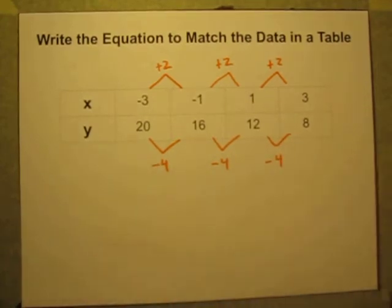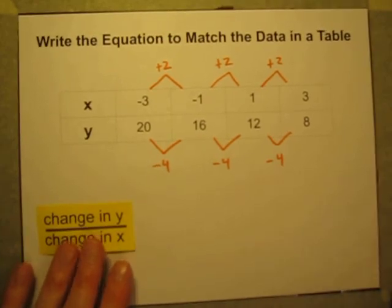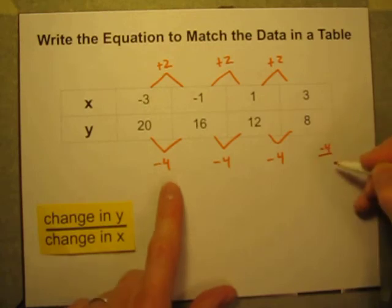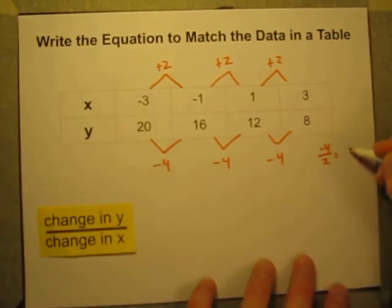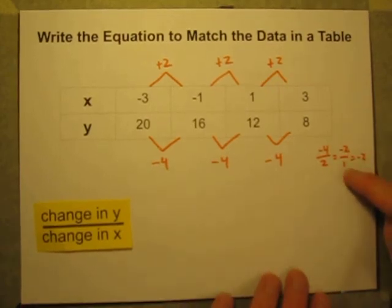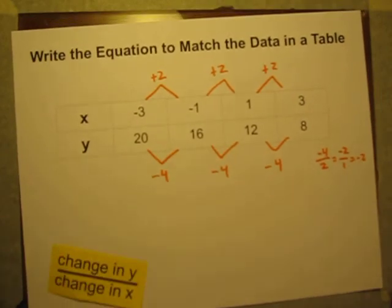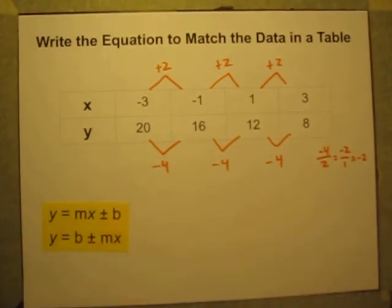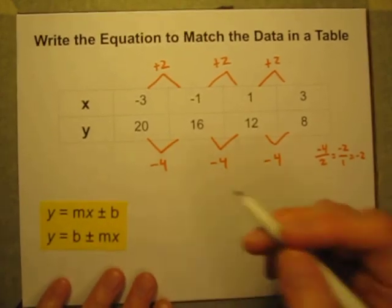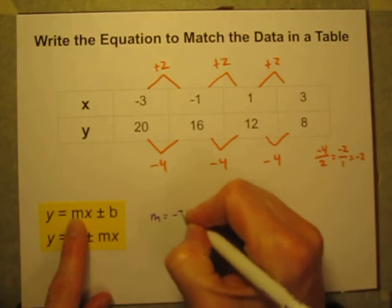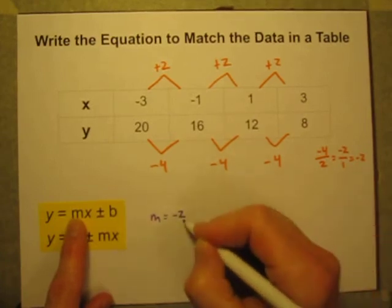So again, that rate of change is going to be the change in y divided by the change in x. I'm losing 4 y's every time I gain 2 x's. Which means I'm losing 2 y's when I gain 1 x. Or just negative 2. Lose 2 y's every time I gain 1 x. So I know now, I know this is a constant rate of change. So my equation is a linear equation, which will take this form. And I know that my m, my rate of change, is equal to negative 2. I lose 2 y's for every 1 x.